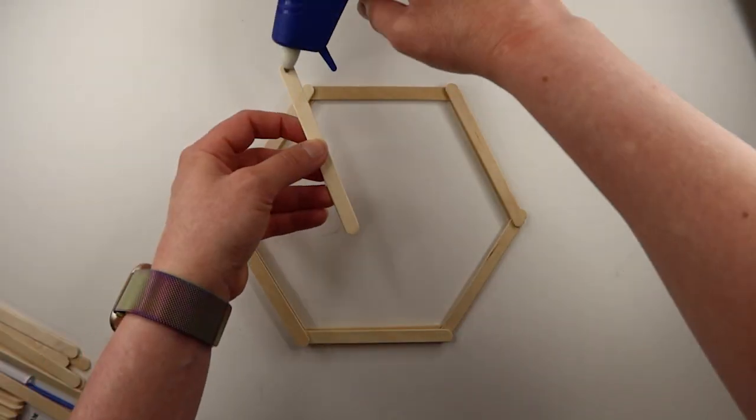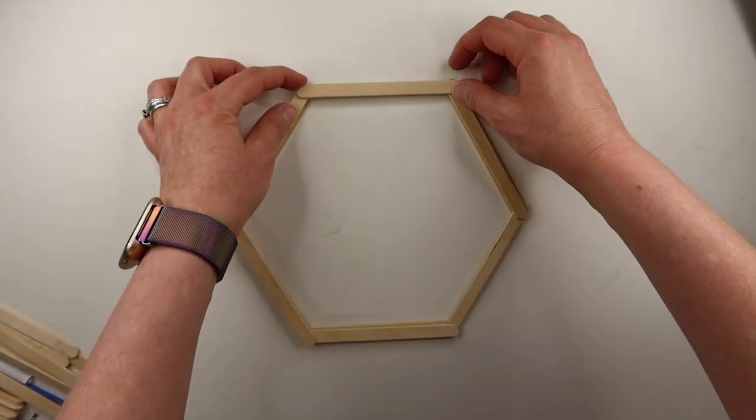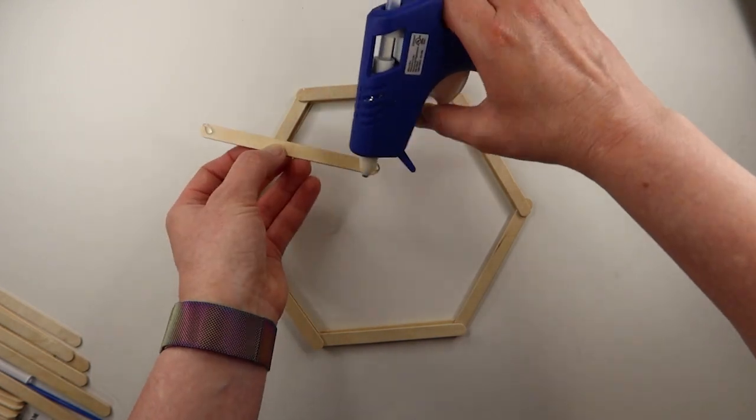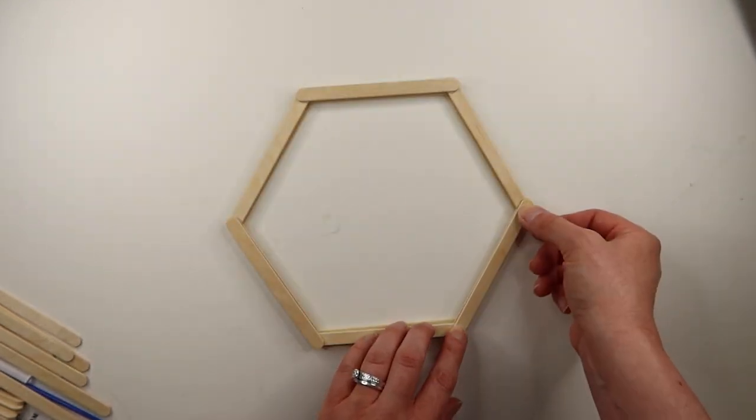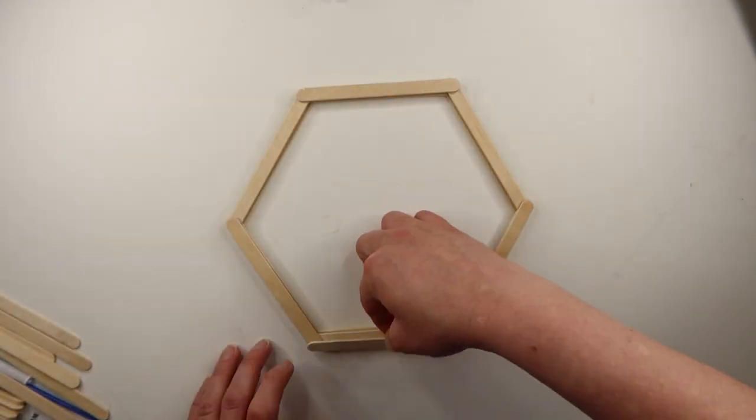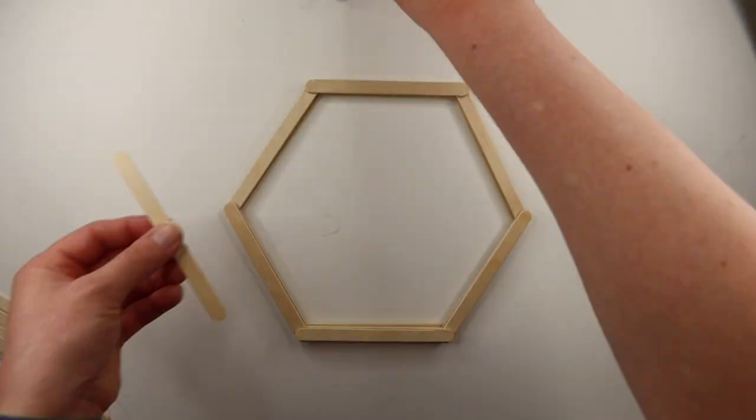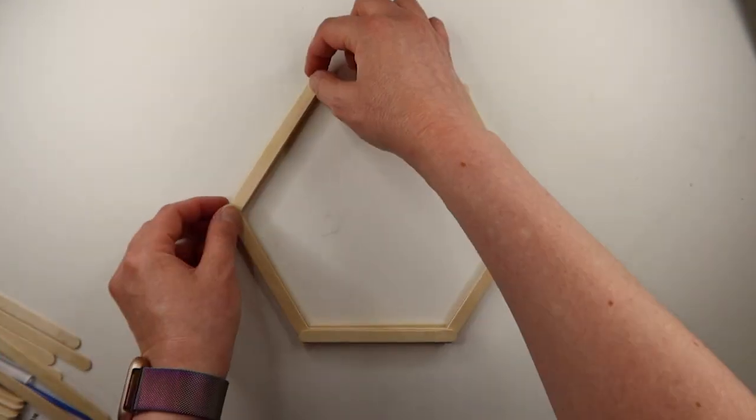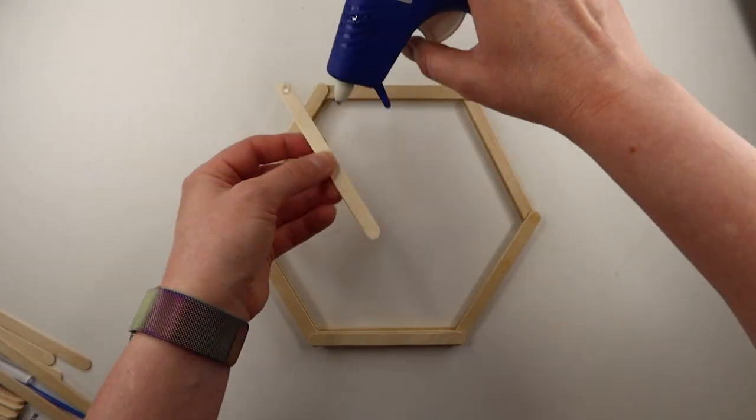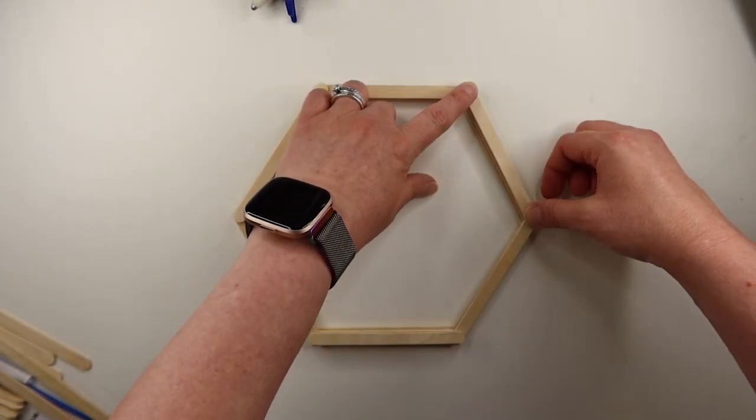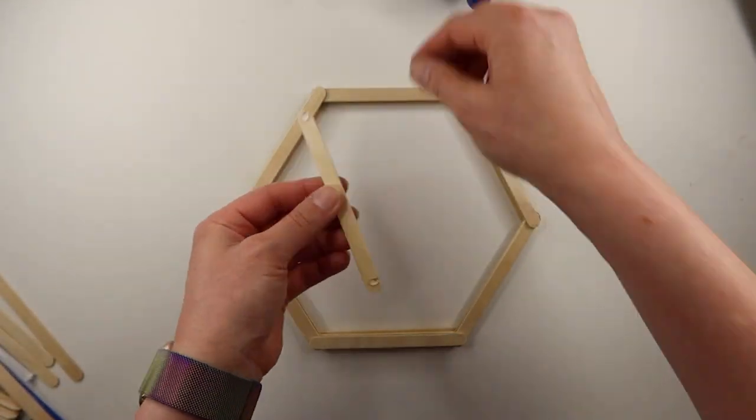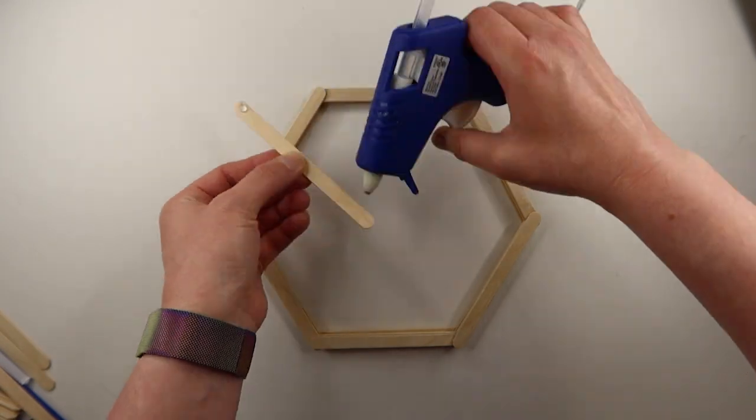Then, glue three more popsicle sticks down in the new gaps where the popsicle stick ends are elevated. Continue adding popsicle sticks until you've used up 69 popsicle sticks. If you're using our kits, you should have one left over. If you're making this on your own, you can use any number of popsicle sticks in sets of three so that your last layer is even. The more popsicle sticks you use, the wider your shelf.